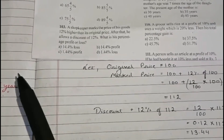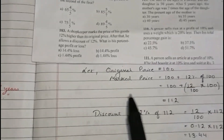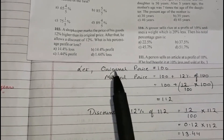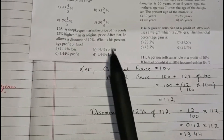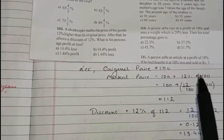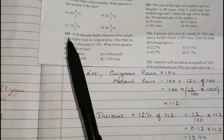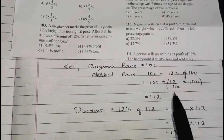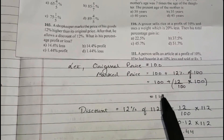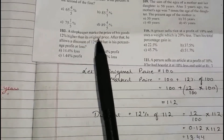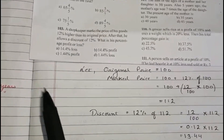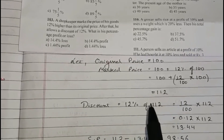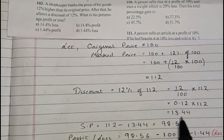We need to find whether there is a profit or a loss. We consider the original price or cost price to be 100. According to the question, the marked price will be 100 plus 12% of 100, because he increased 12% higher than the original price. So 100 plus 12% of 100 gives us 112. He then allows a discount of 12%, so discount equals 12% of 112, the marked price. Solving this gives 13.44.